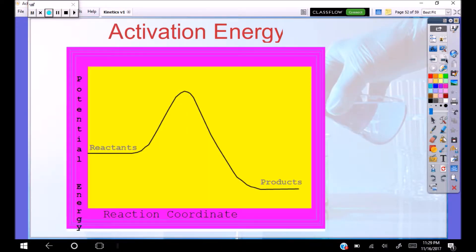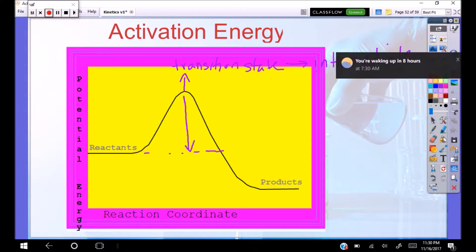So we have our activation energy. I've talked about this briefly before, but the key here is that at this peak, we have our transition state. You just watched a playposit on reaction mechanisms, so we can also say this transition state is our intermediate. When we're looking at activation energy, our activation energy is the amount of energy.